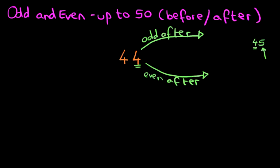Is 5 an odd number or an even number? Just remember, the even numbers go: 0, 2, 4, 6, 8. The odd numbers are: 1, 3, 5, 7, 9. So 5 is an odd number. Therefore this number goes over here — 45. That is correct.